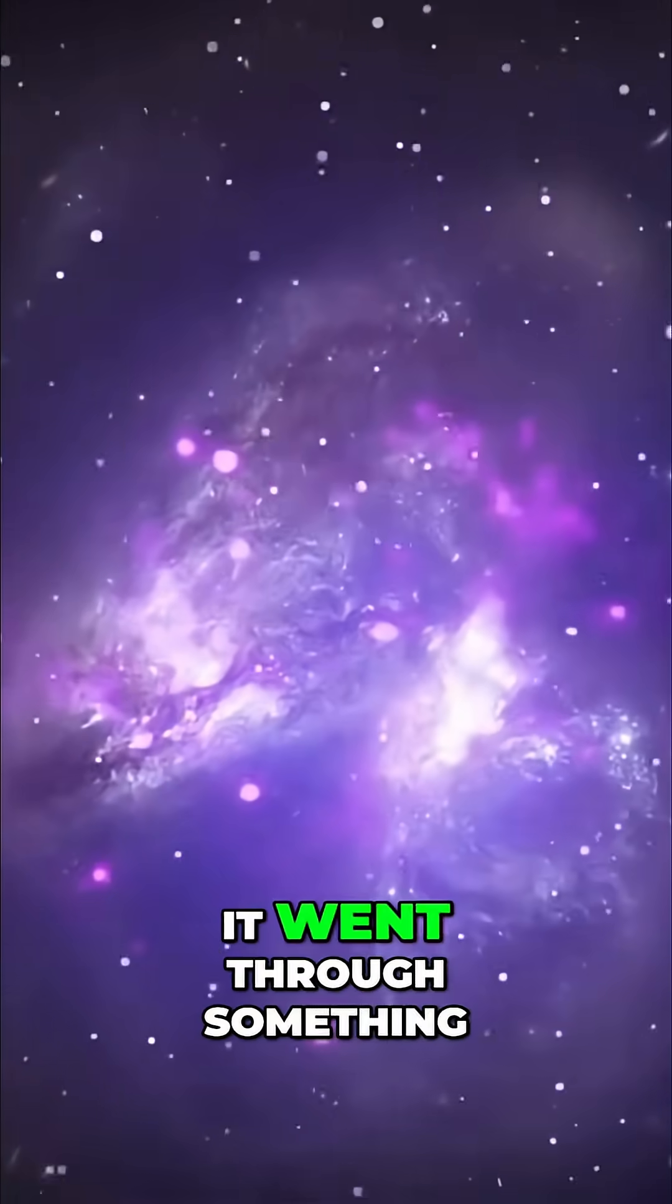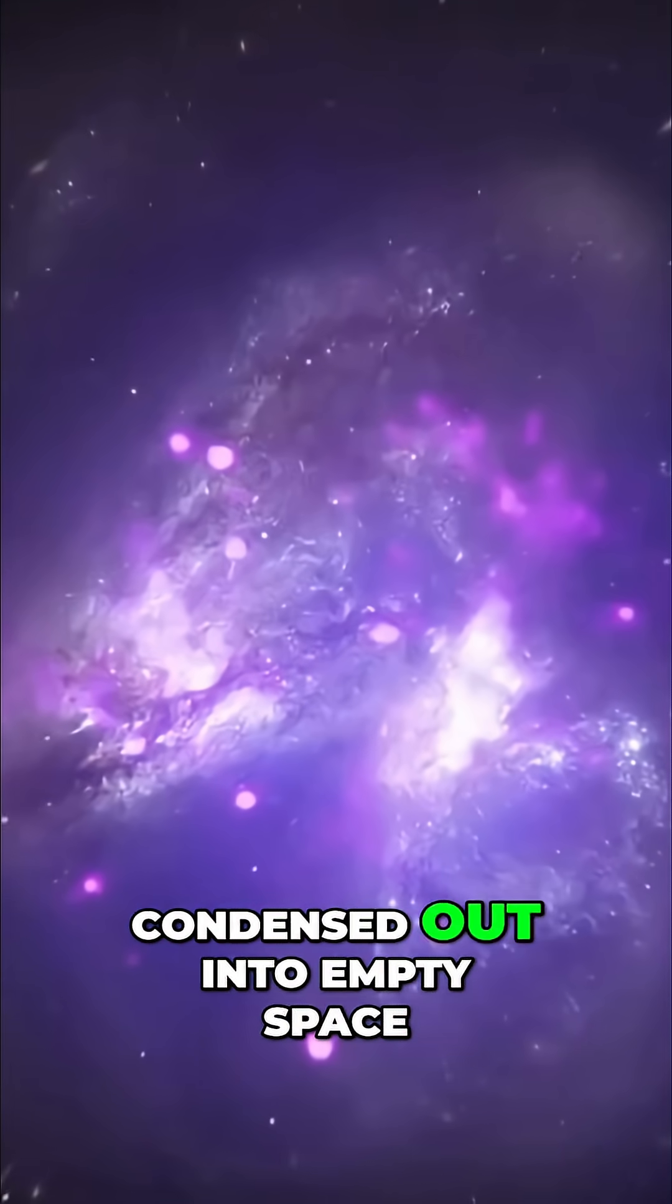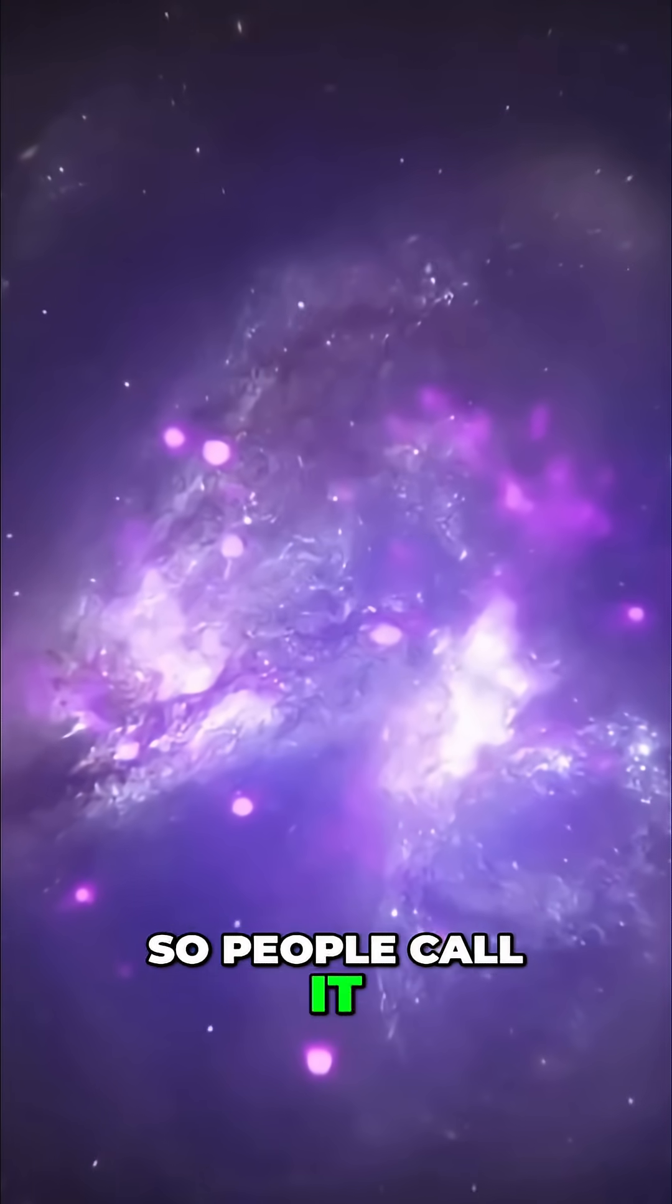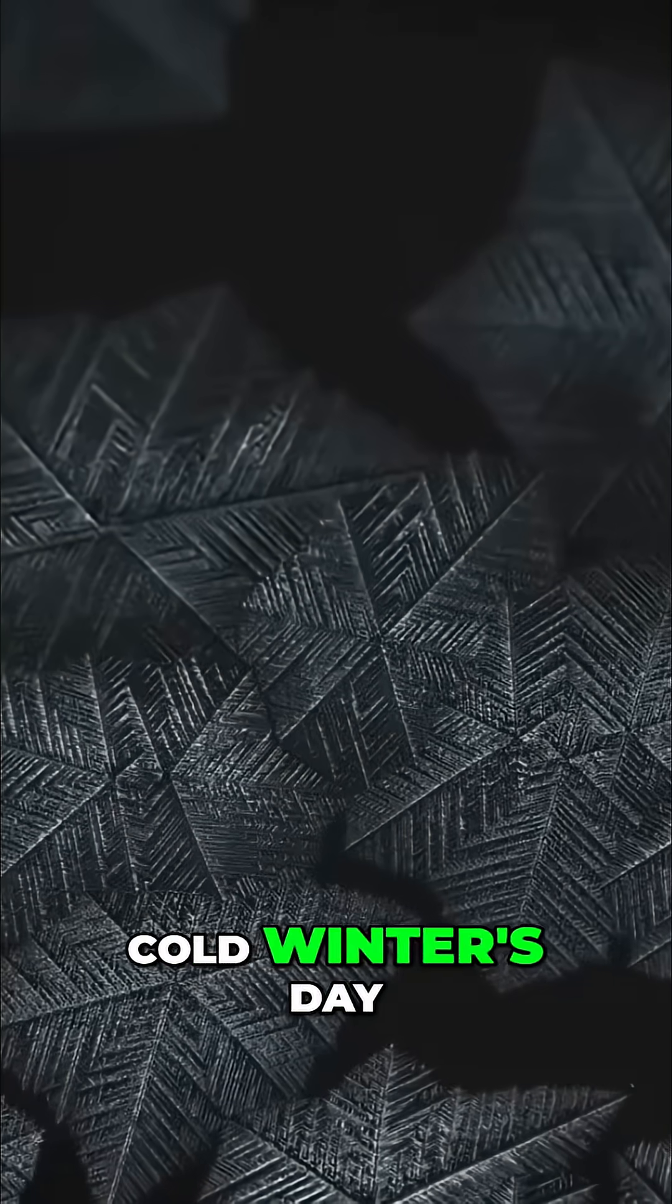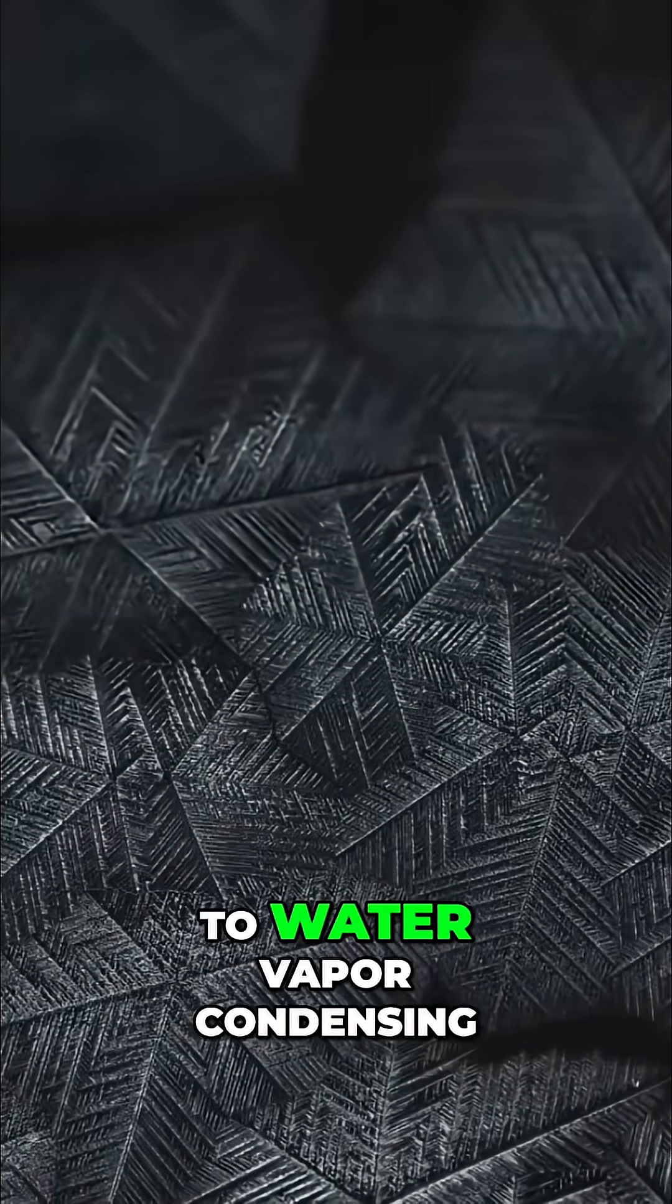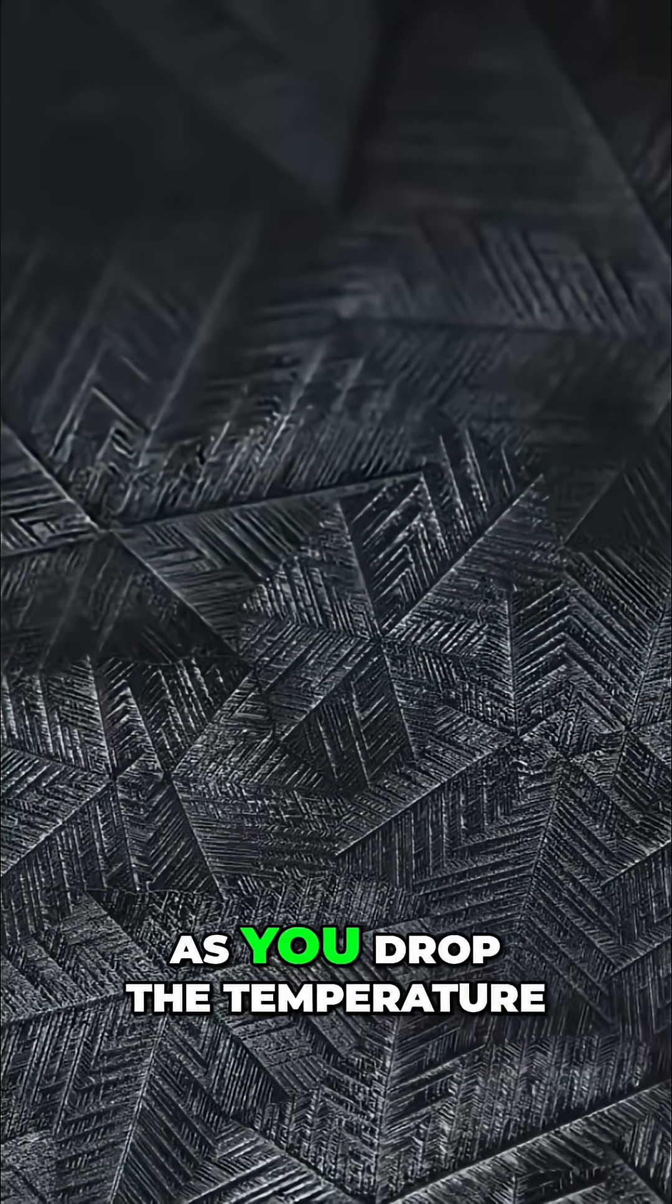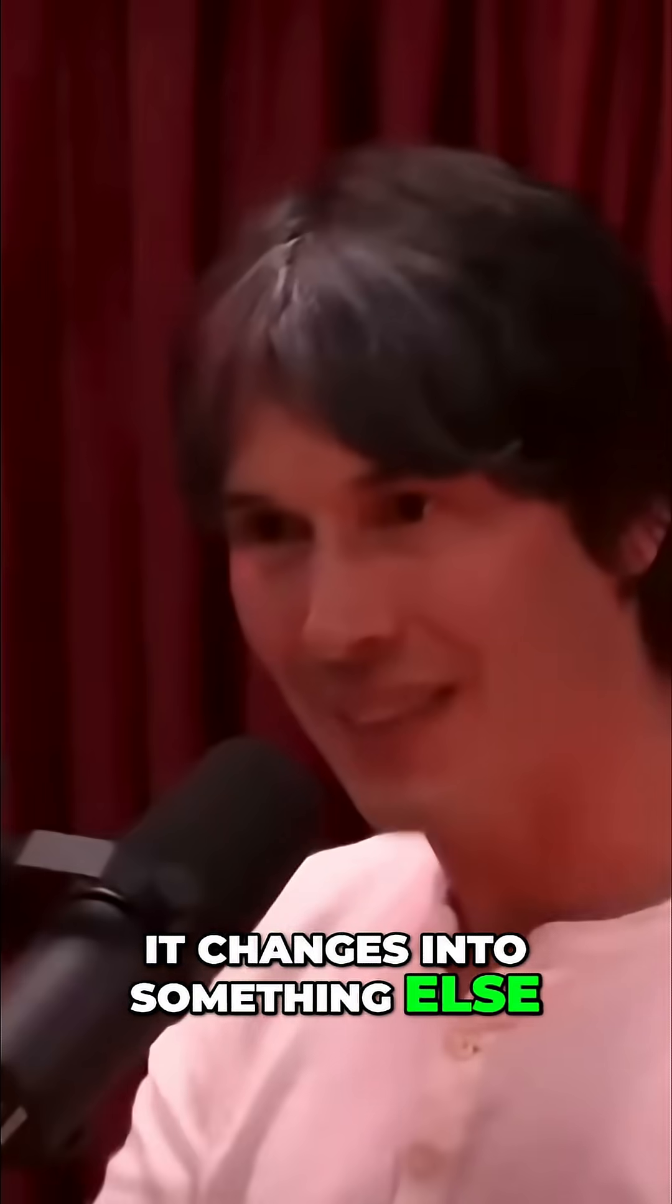As the universe cooled, it went through something that condensed out into empty space. People call it a phase transition. It's analogous to a window pane on a cold winter's day, analogous to water vapor condensing out into ice. As you drop the temperature, it changes into something else, into ice.